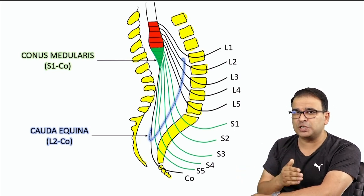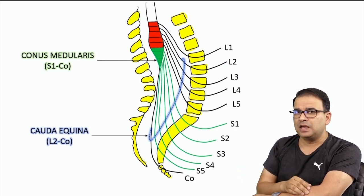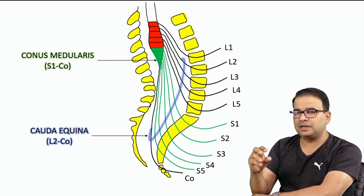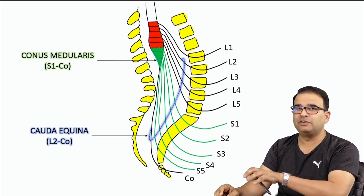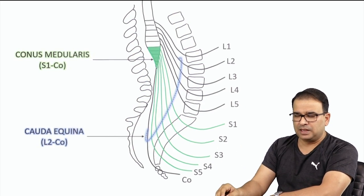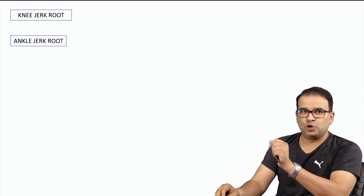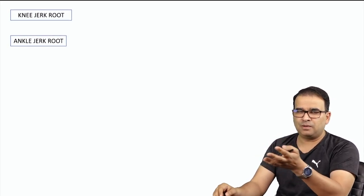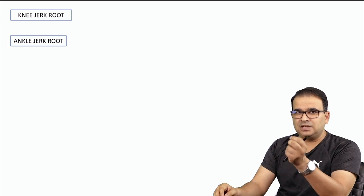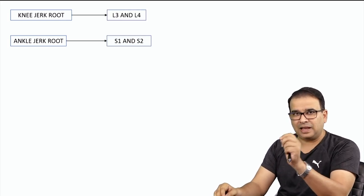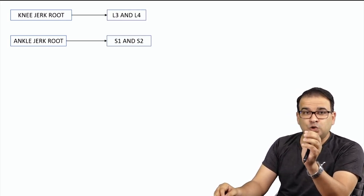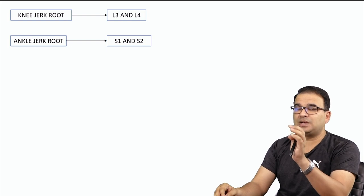Before switching to the syndromes, we first want to understand certain basics so we can apply them to both syndromes and see how they differ. The first thing we should know is about the ankle jerk and the knee jerk. The knee jerk root value is L3 and L4, and the ankle jerk root value is S1 and S2.